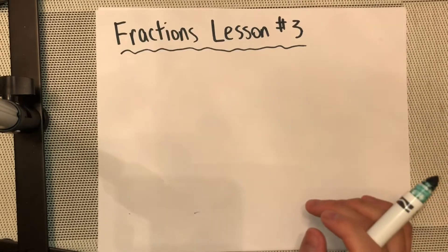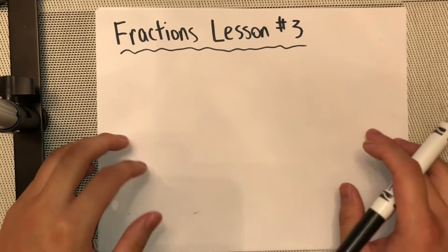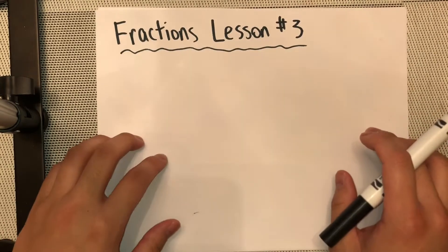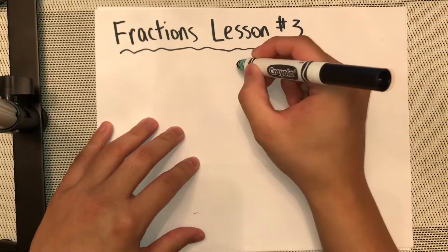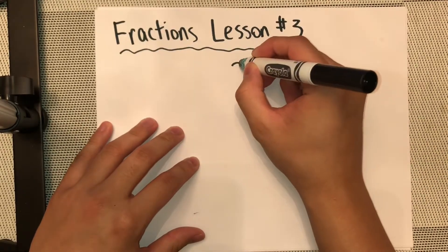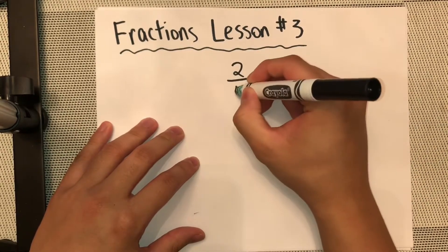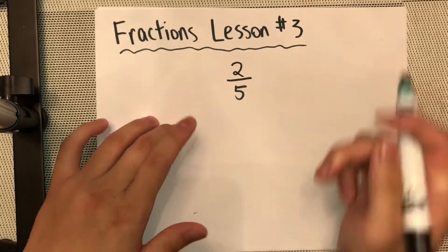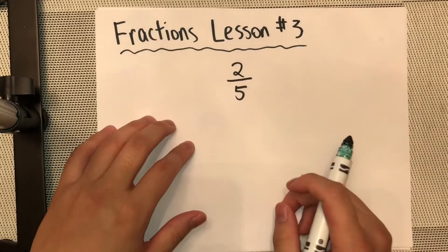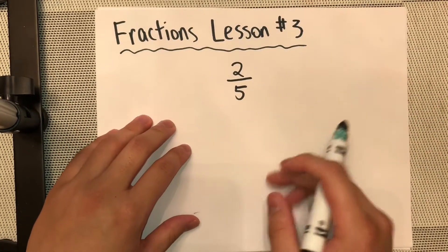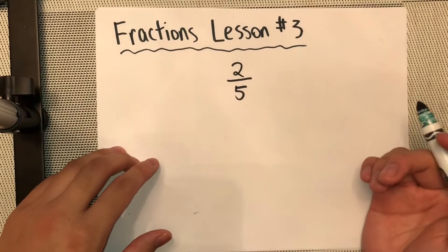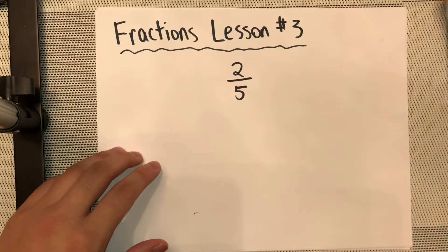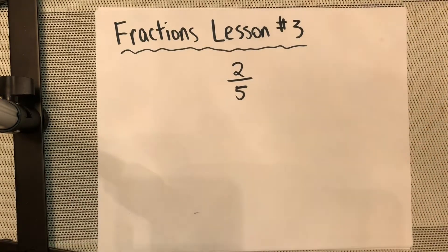So let's say I have the fraction 2/5. Is this closer to 0 or closer to 1, and how can I know?